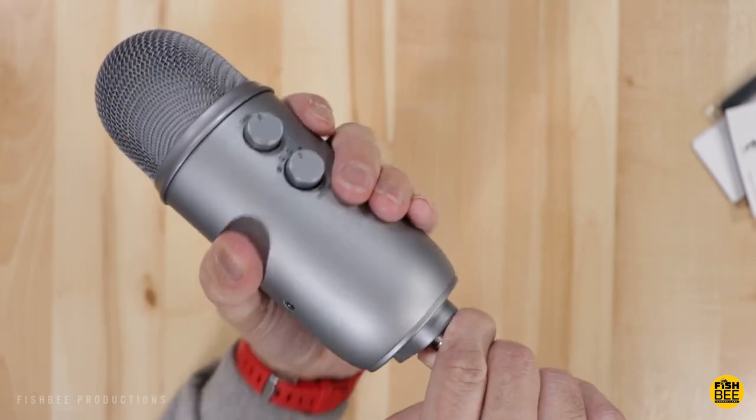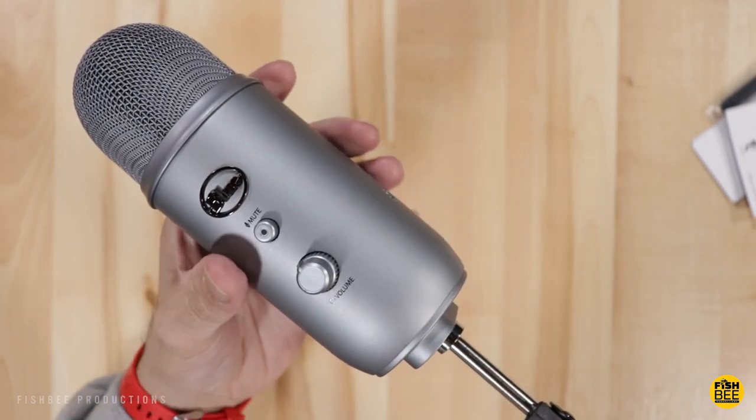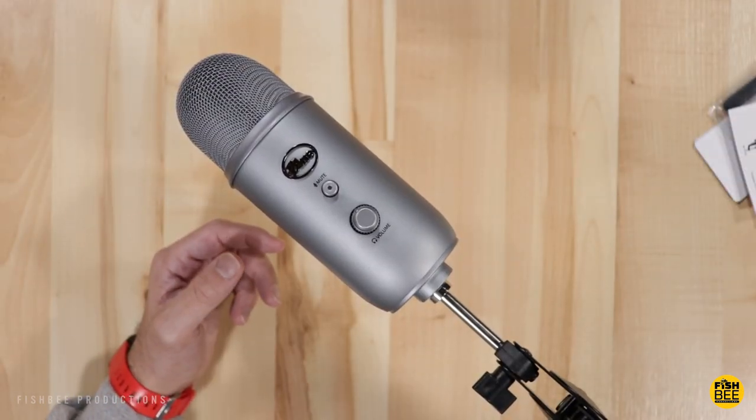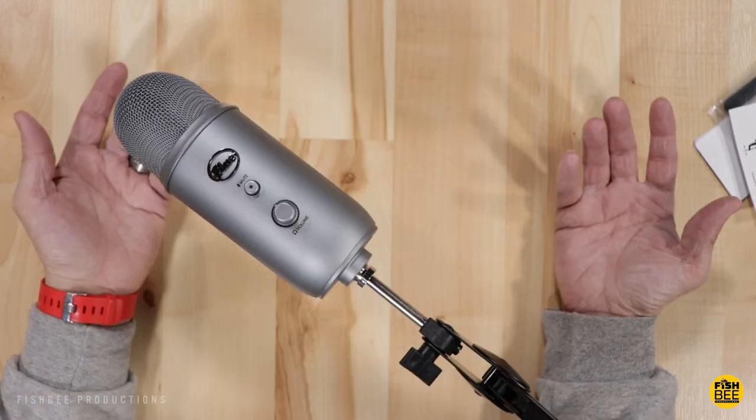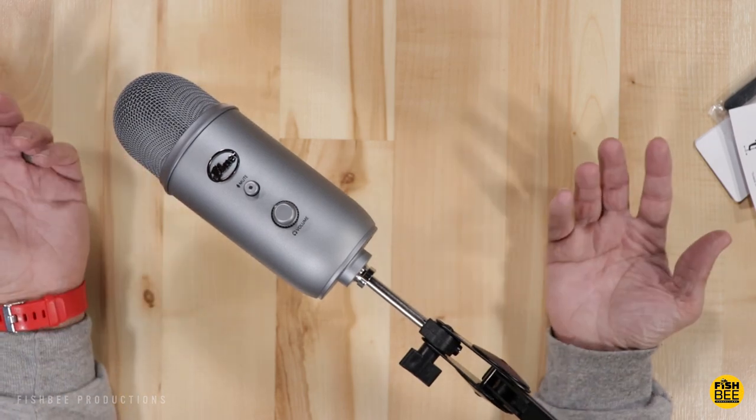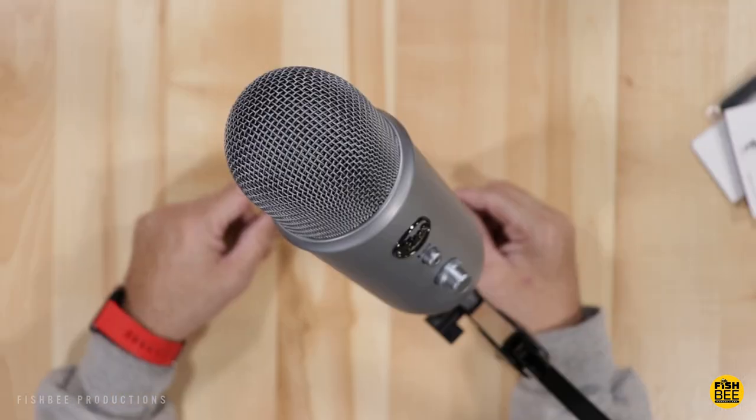I feel like I almost have to break it just to get it to move. Now it does seem to support the weight of the Blue Yeti microphone with no problems. I don't know, I really like the style of this one better than the Toner, but functionality-wise I just don't think it's that close. The only way I could see buying this one over the Toner boom arm is if you're not going to move your microphone very often and it just needs to stay in the same place.